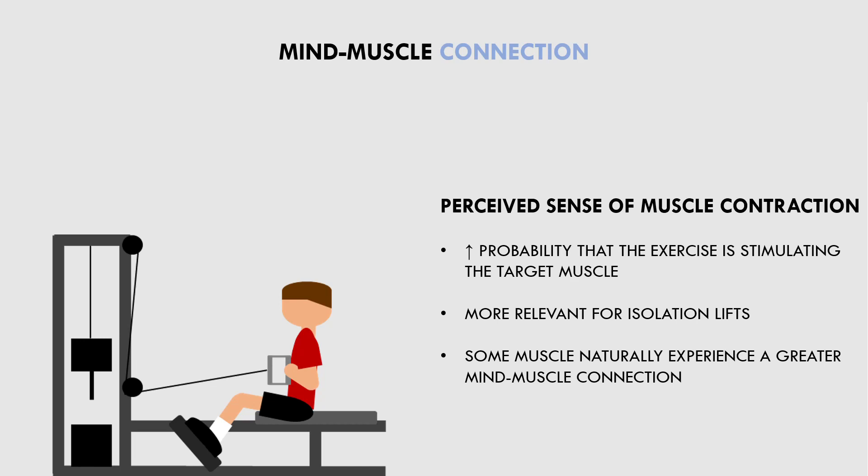Furthermore, some muscles naturally feel more of a mind-muscle connection than others. For example, a muscle like the triceps generally experiences a very strong connection during isolation lifts, while the delts don't necessarily experience the same level of connection.